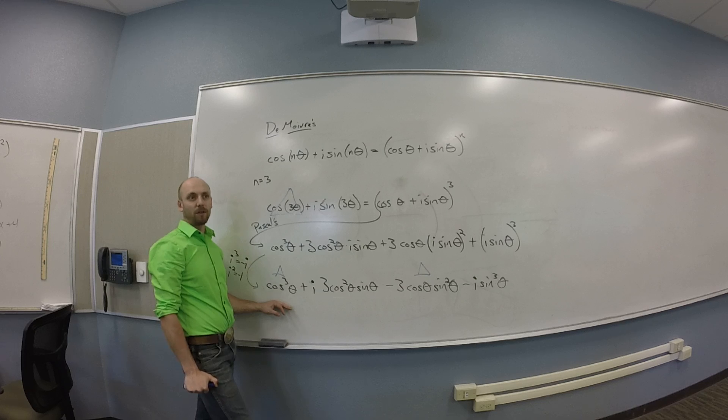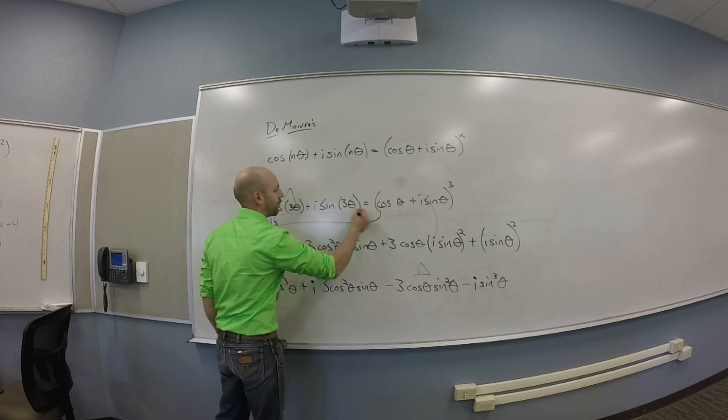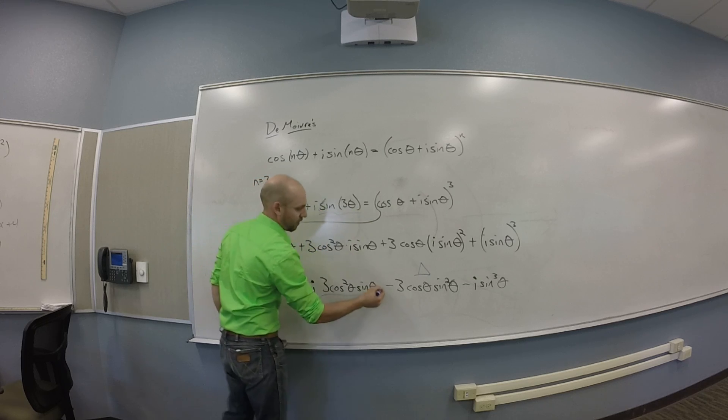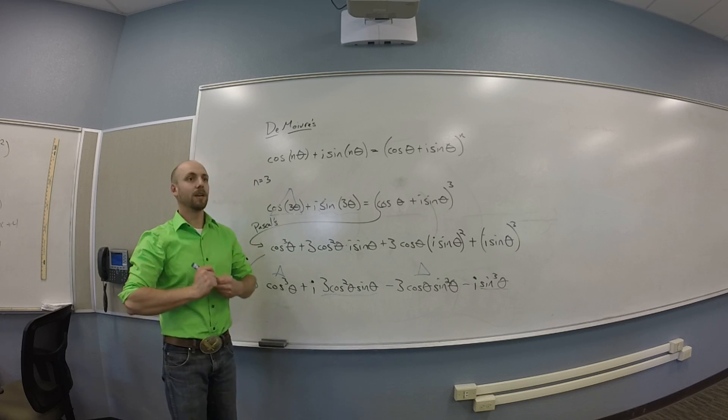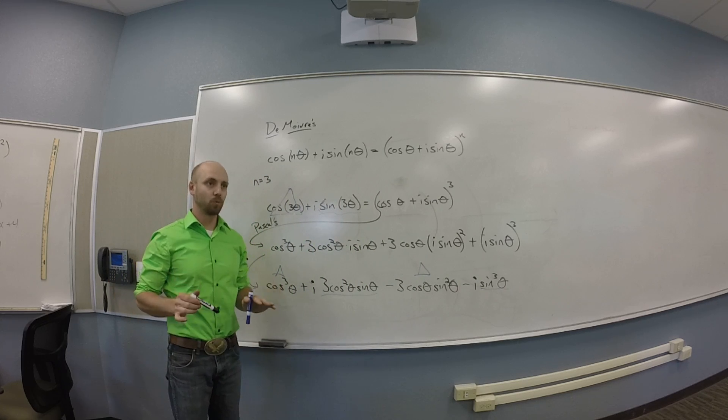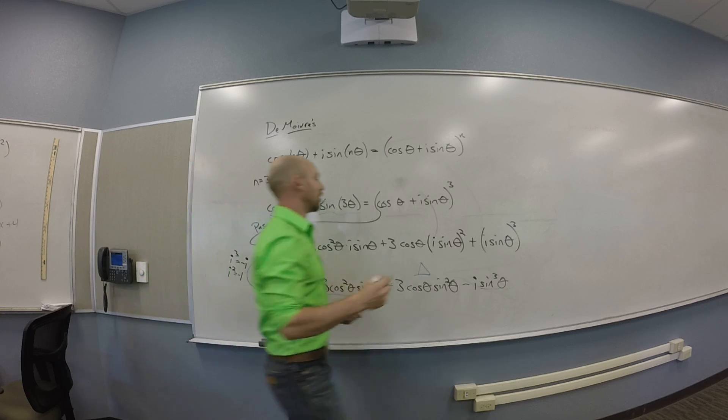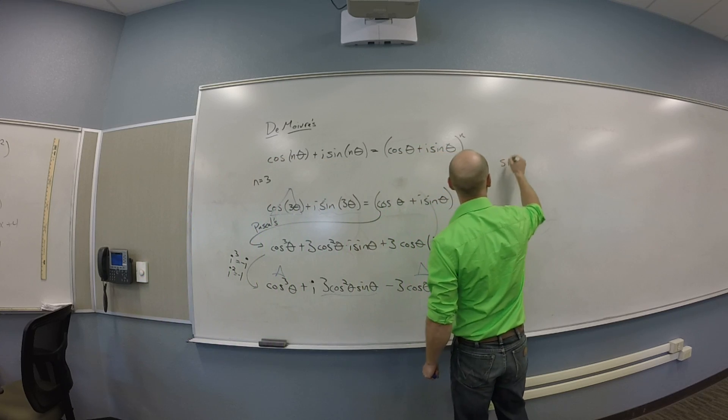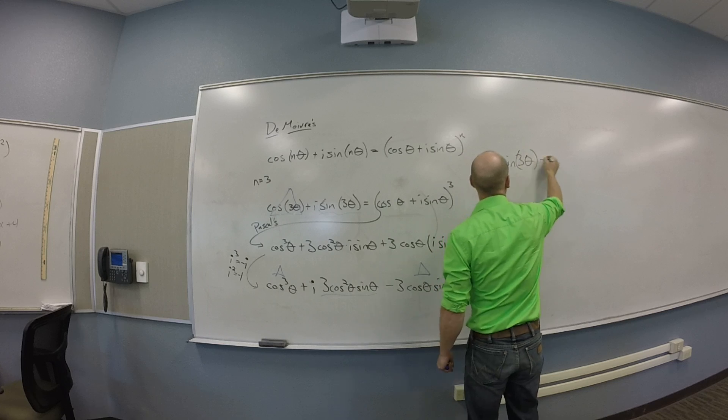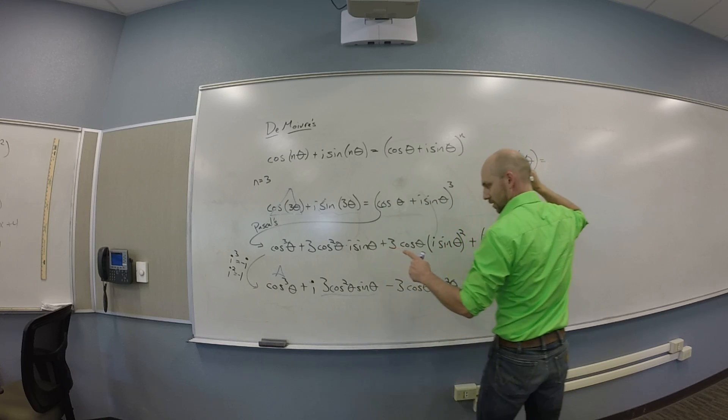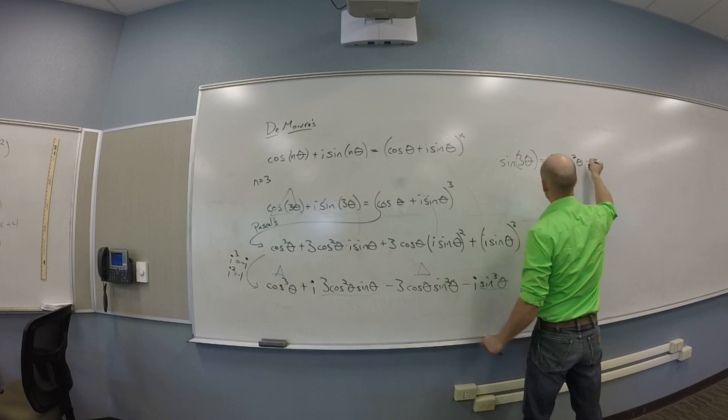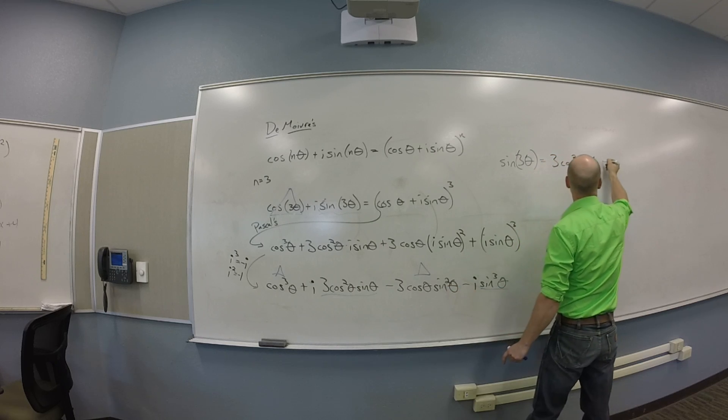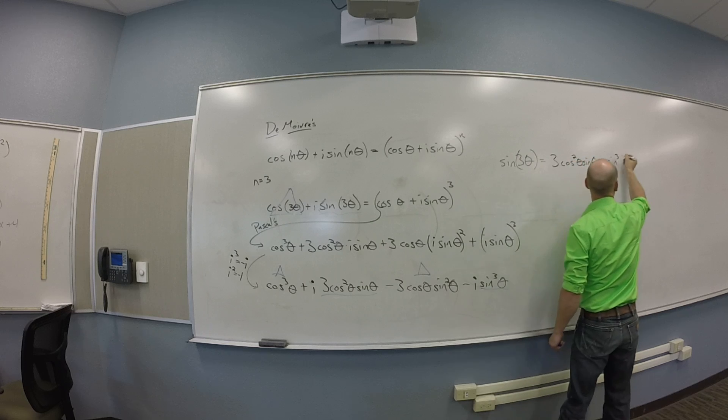But I was asked for the triple angle for sine, right? So sine's the other stuff. But when you do that, you want to drop the i's. They're just telling you which stuff is which. So ultimately here I get sine of 3 theta is 3 cosine squared theta sine theta minus sine cubed theta.